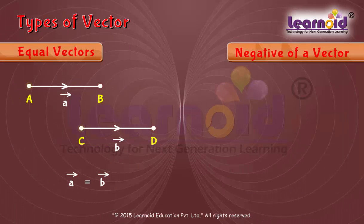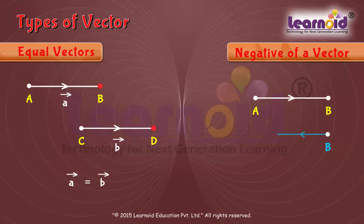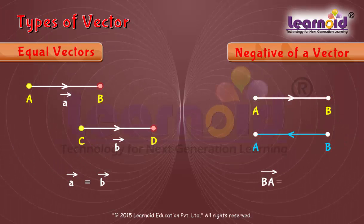Negative of a vector is a vector whose magnitude is the same as that of a given vector but has the opposite direction. Vector BA is equal to minus of vector AB.